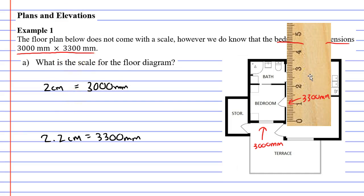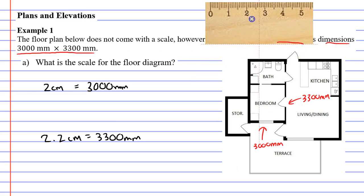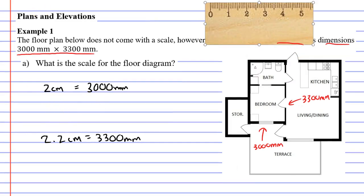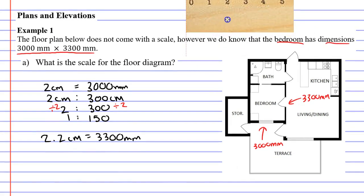We need to write this as a scale. First of all, let's put our dimensions in the same units. Two centimeters is equivalent to 300 centimeters because to go from millimeters to centimeters you just take a zero off. Now we can get rid of the units since they're both in the same units and we'll write our scale as 2 to 300. Then finally we'll divide both sides by 2, which gives us 1 to 150.